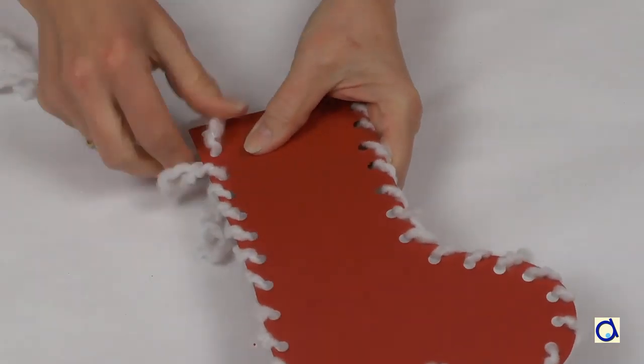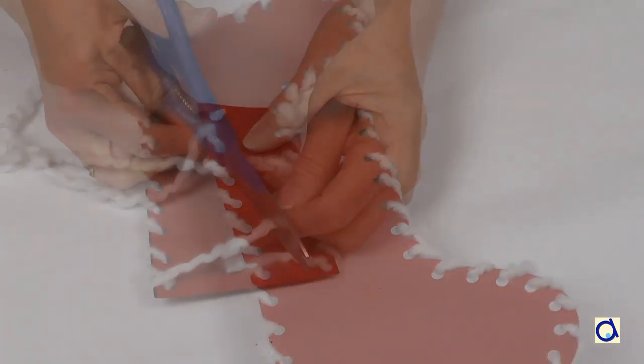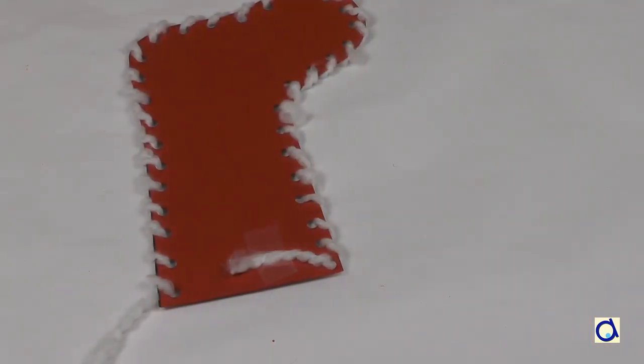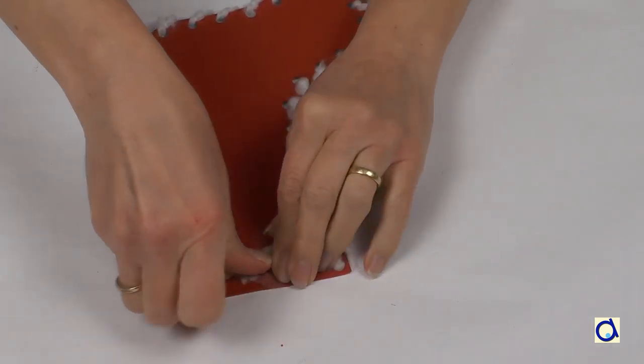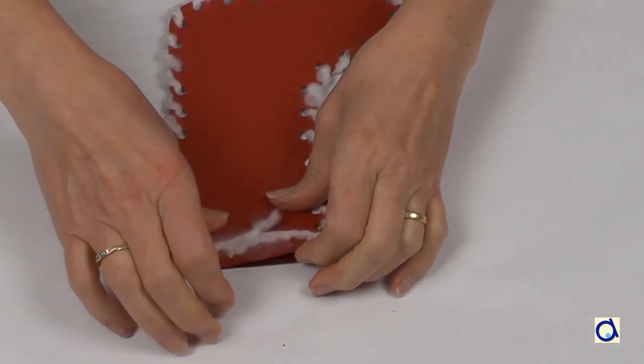Then pass through the second hole from below and bring the yarn up again. Continue this spiral movement all along the stocking and paste the end of the yarn on the back of the stocking.